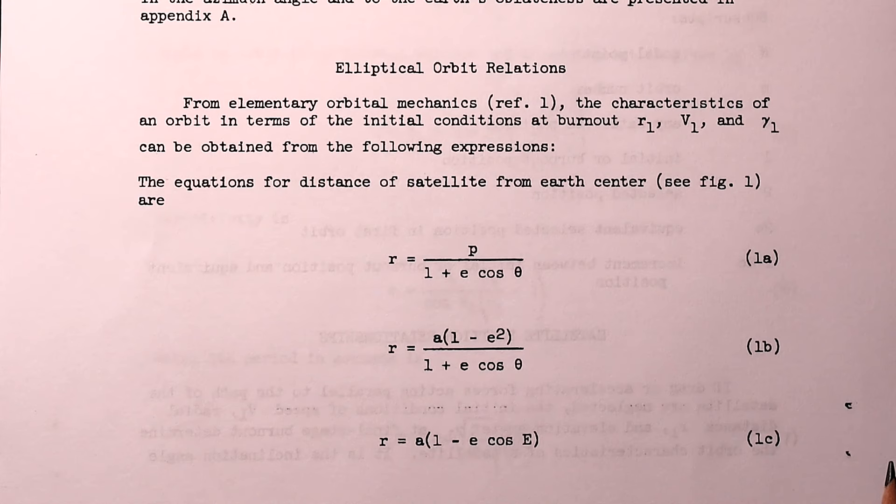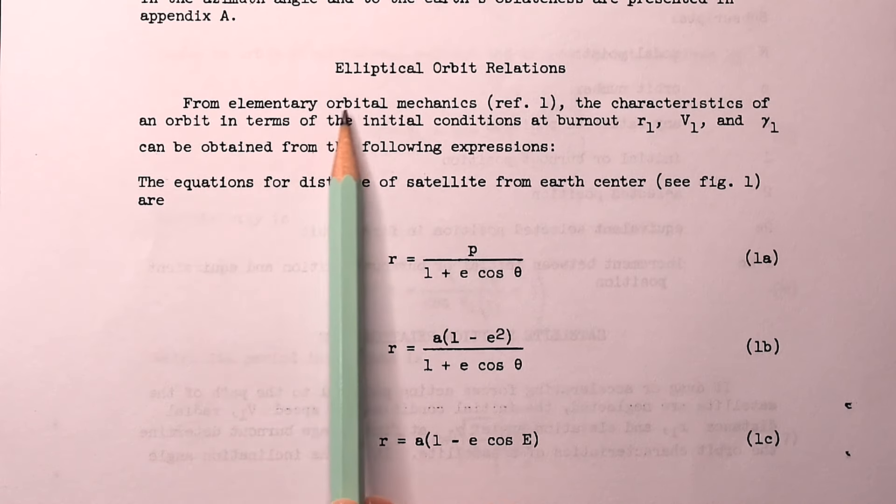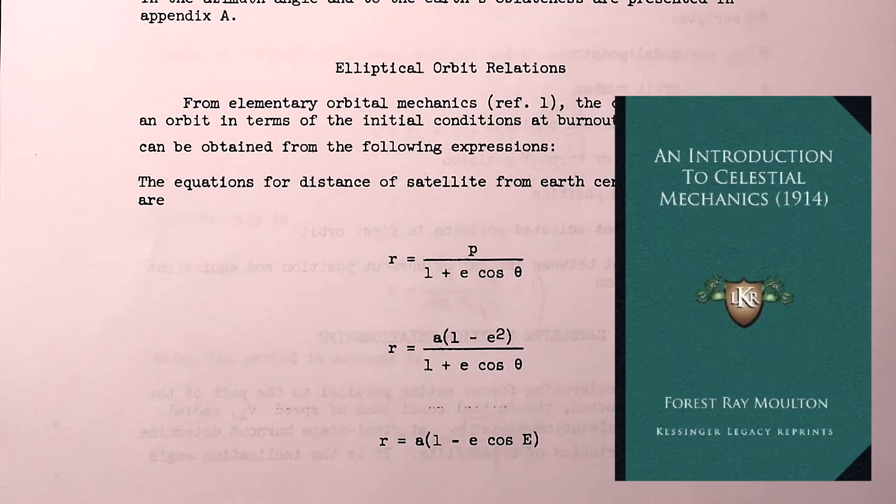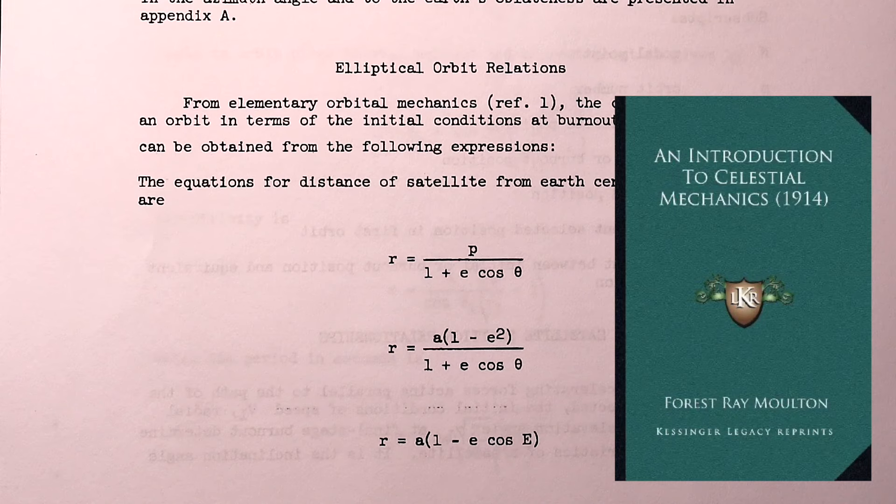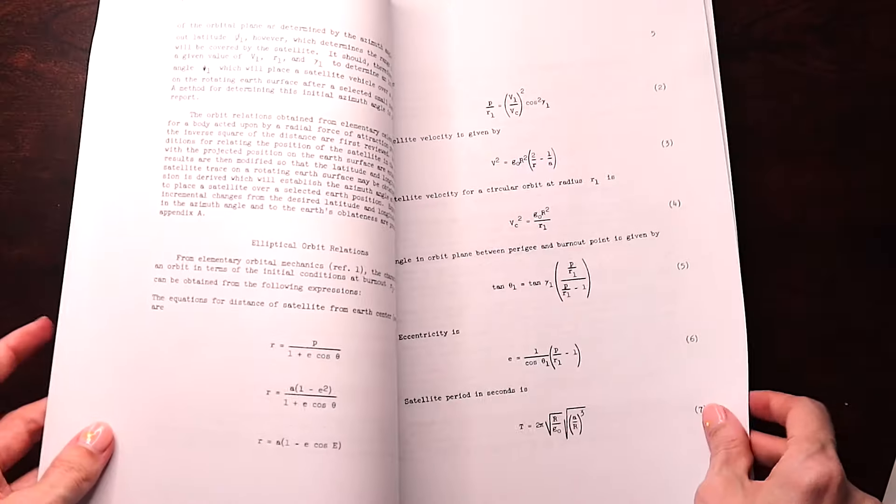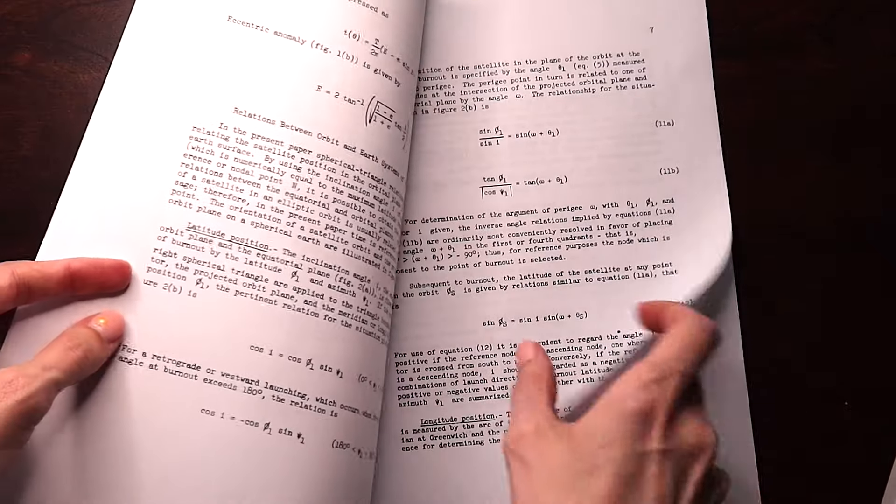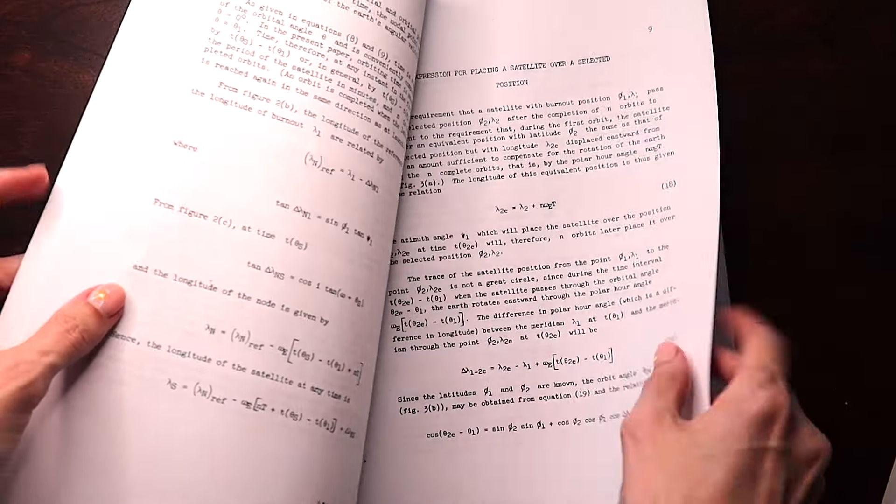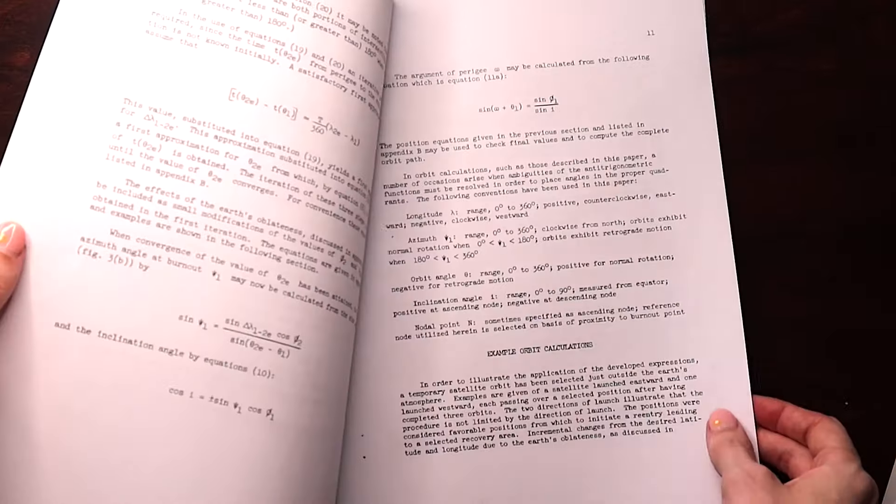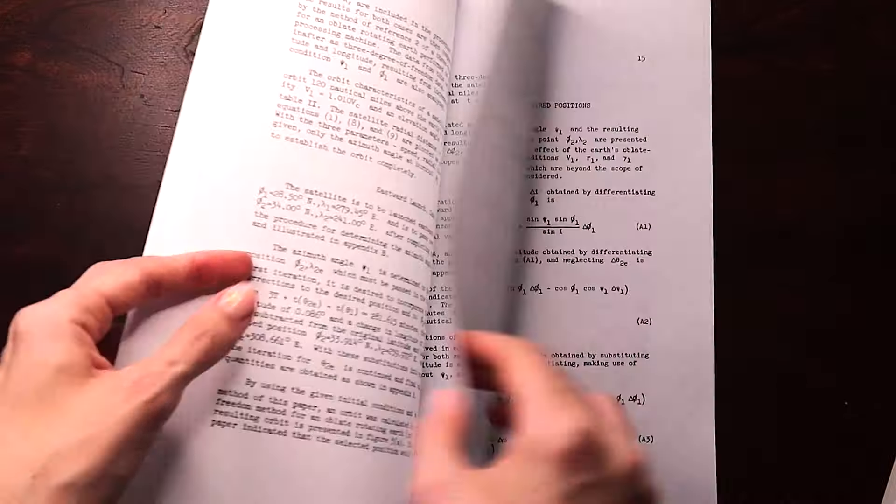So going on to work out a way to relate all of these parameters, they start with a bit of elementary orbital mechanics, for which they reference an introduction to celestial mechanics published in 1914. These are all derivations working towards that ultimate relationship between the azimuth angle and the longitude and latitude that we wish to land at.